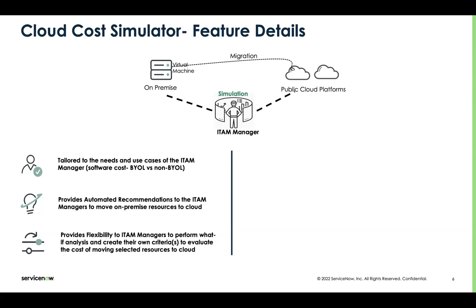iTime managers get more flexibility to perform what-if analysis and create their own criteria. For example, if they just want to see the cost of moving a particular cluster to the cloud, they can select that particular criteria and the feature will showcase the cost of moving that cluster to the cloud. In addition, they can provide more criteria such as a particular region or a particular storage type, and the feature will automatically determine the most cost-optimal virtual machine that aligns to those criteria.